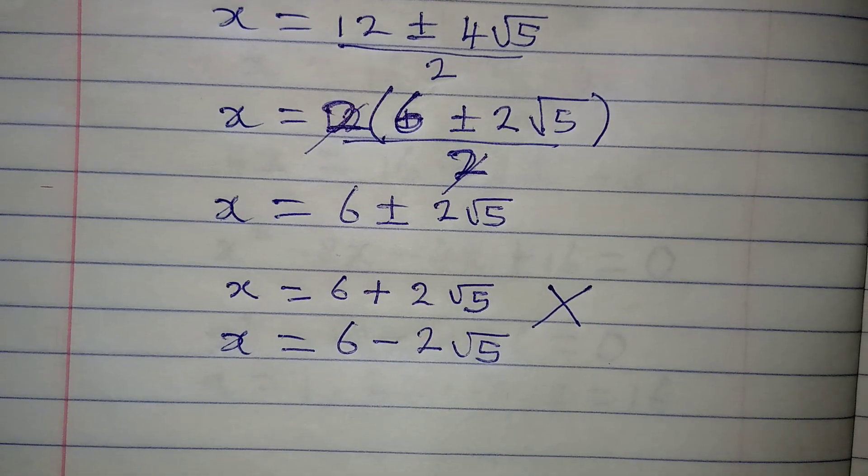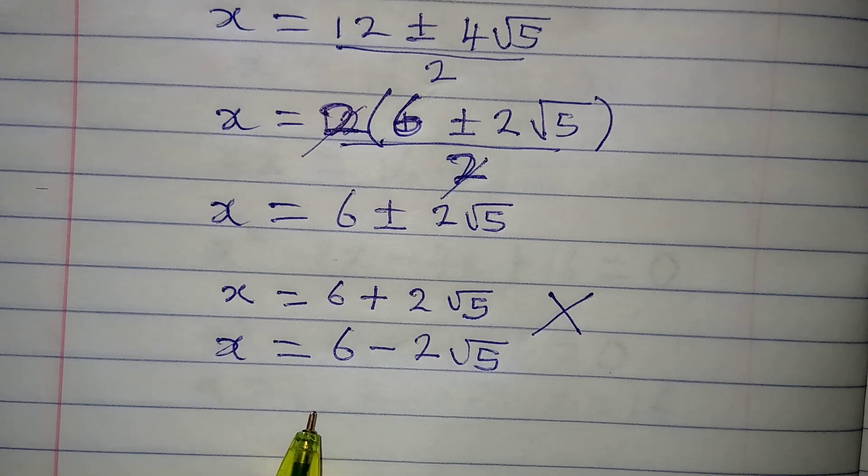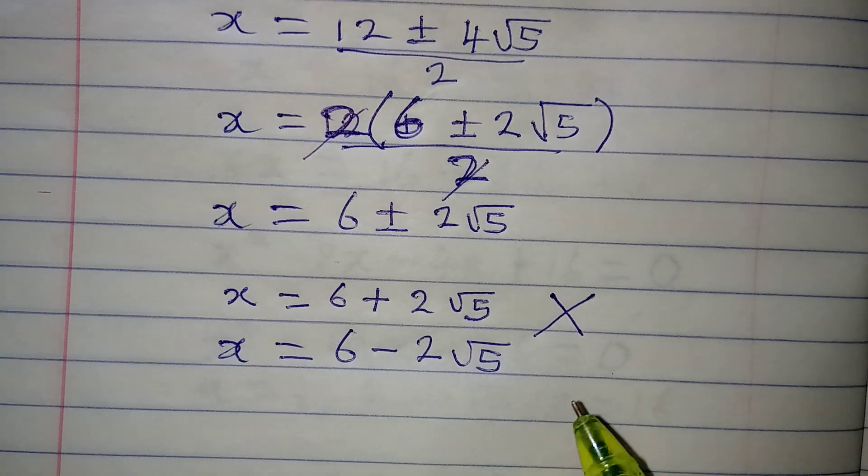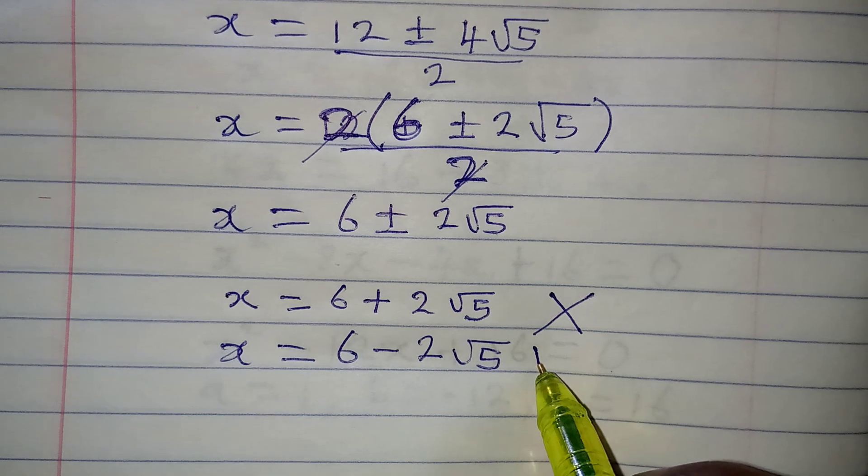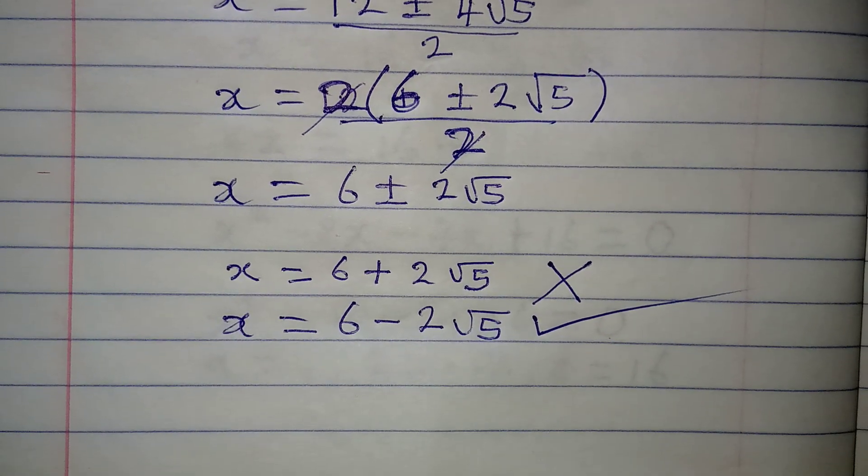Now, the second solution will be x equal to 6 minus 2 root 5. Now, the question is, does this satisfy the given equation? And the answer is yes, it satisfies. So this means that we accept this as the only solution to the equation.